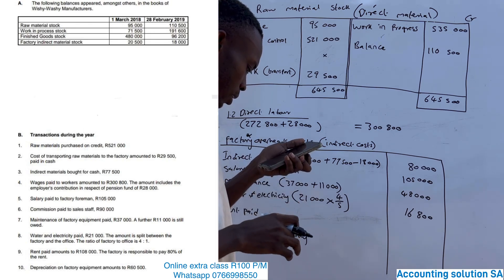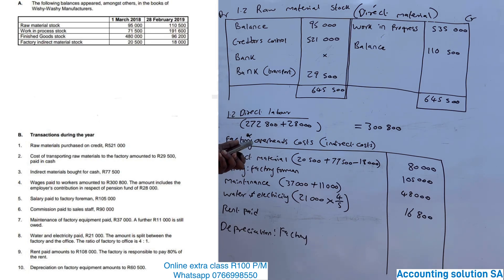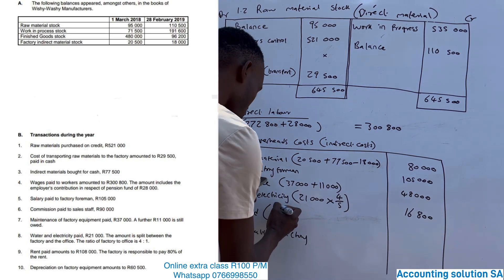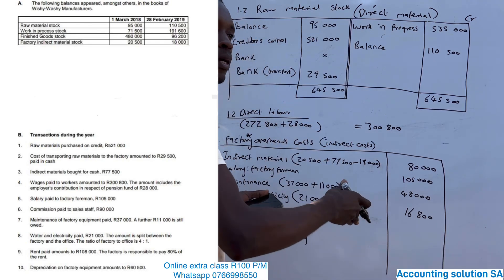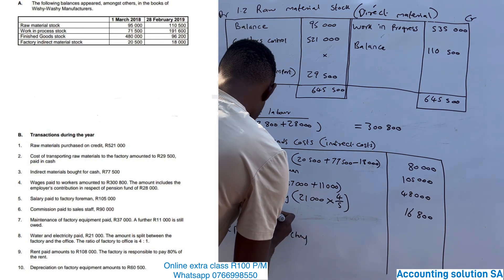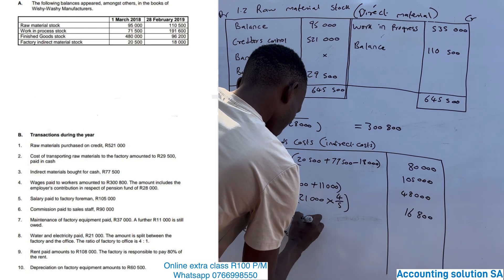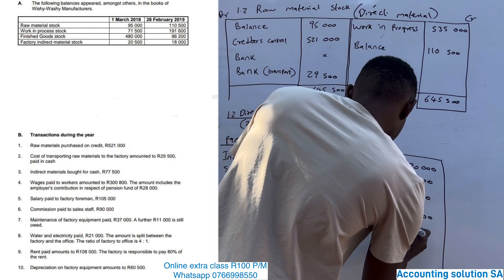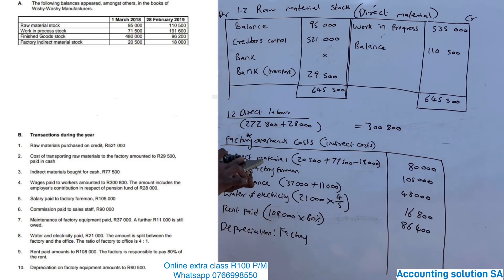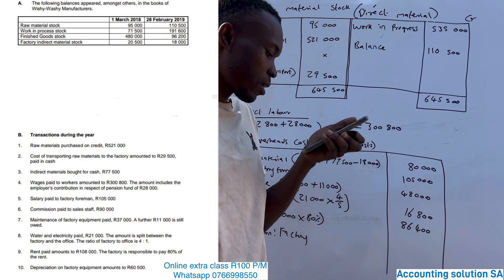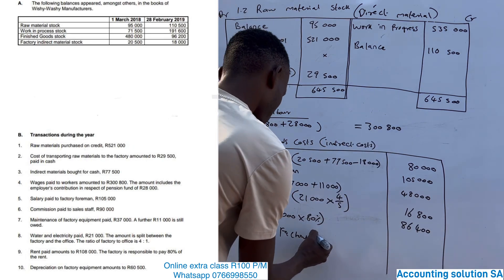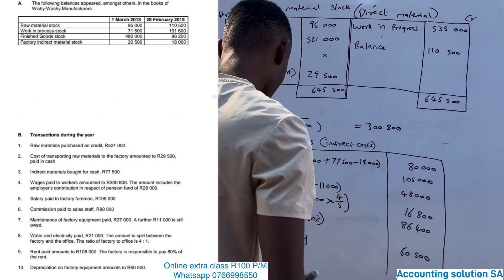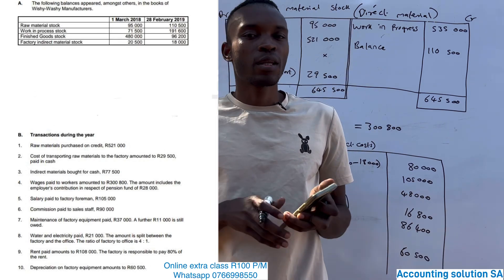Rent paid amounts to 108,000 and the factory is responsible for 80% of the rent. The office and selling and distribution portions are not included here. So factory rent equals 108,000 times 80%, giving us 86,400. The last item: depreciation on factory equipment amounted to 60,500 — we include it because it's for the factory.